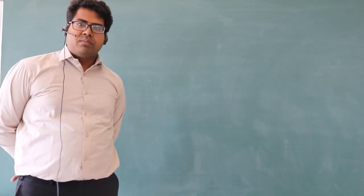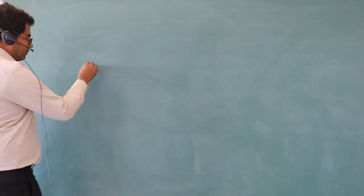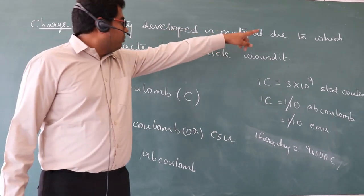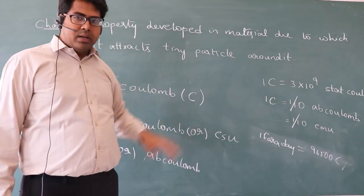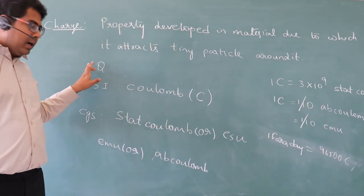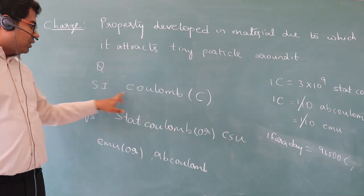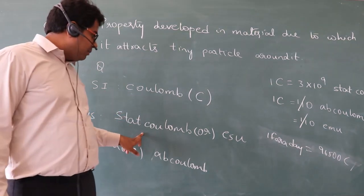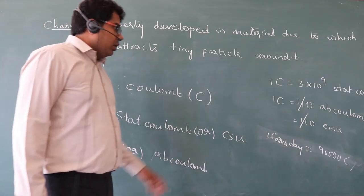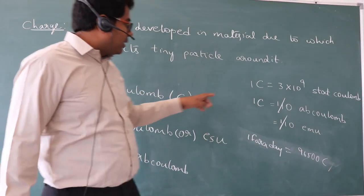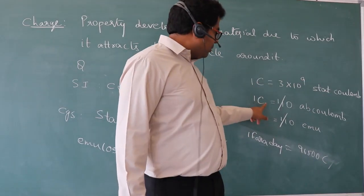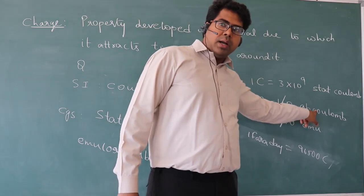This property is measurable and it is denoted by capital Q. Its SI unit is coulomb. CGS unit is stat coulomb or electrostatic unit, and its magnetic unit is electromagnetic unit or abcoulomb. The relation between these units: 1 coulomb is equal to 3 × 10⁹ stat coulomb, and 1 coulomb is equal to 1/10 abcoulomb or electromagnetic unit.